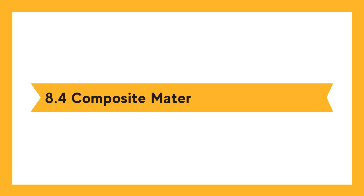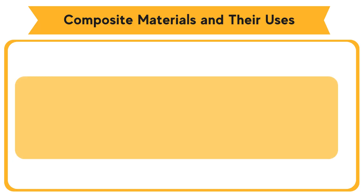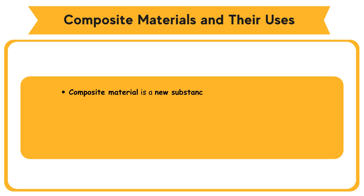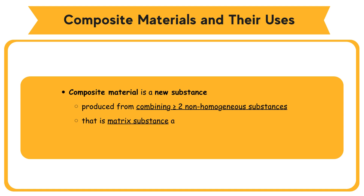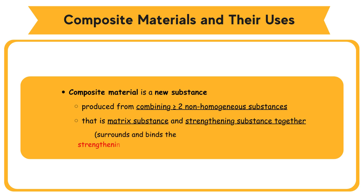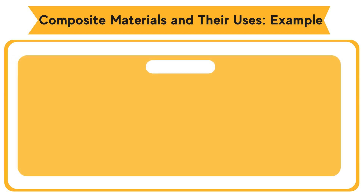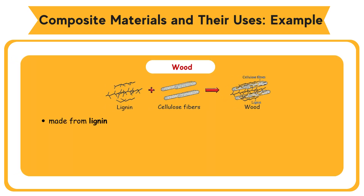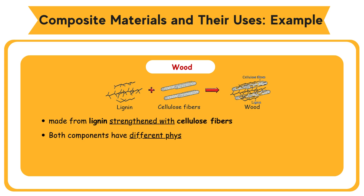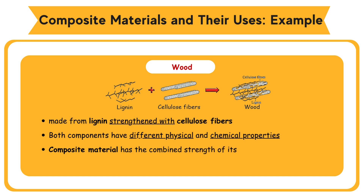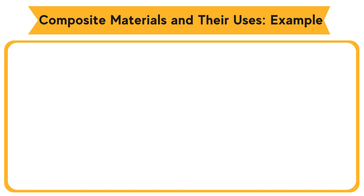Composite material is a new substance produced from combining two or more non-homogeneous substances — that is, matrix substance and strengthening substance together. The matrix substance surrounds and binds the strengthening substance together. For example, wood is made from lignin strengthened with cellulose fibers. Both components of a composite material have different physical and chemical properties.